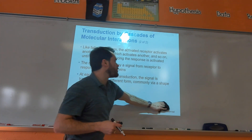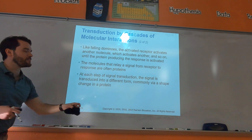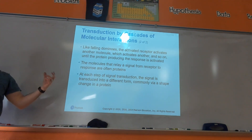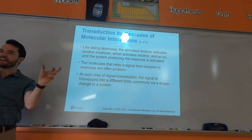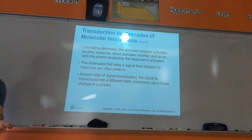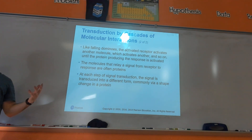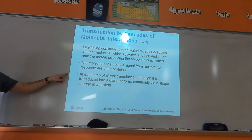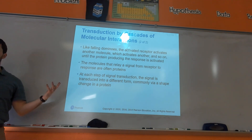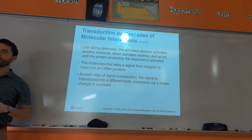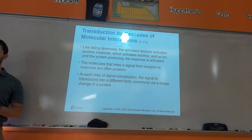Think of a game of pinball or falling dominoes. Because with kinases, one molecule phosphorylates another, which phosphorylates another, which eventually phosphorylates the actual protein that you want to do the job. Adding that phosphate group changes the shape of the protein into the active form as opposed to the inactive form.